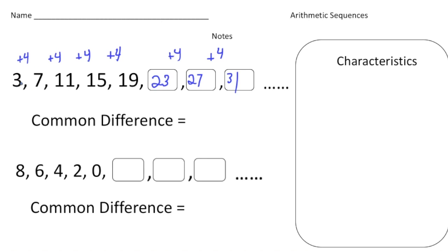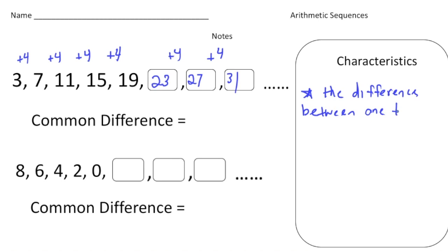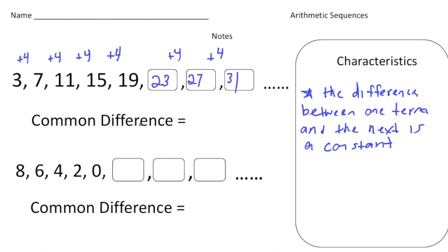The fact that these numbers are increasing by a constant rate of plus 4 is a key characteristic of arithmetic sequences. The difference between one term and the next is a constant. That constant is also called the common difference — represented by a lowercase d. In this case, the common difference is 4.